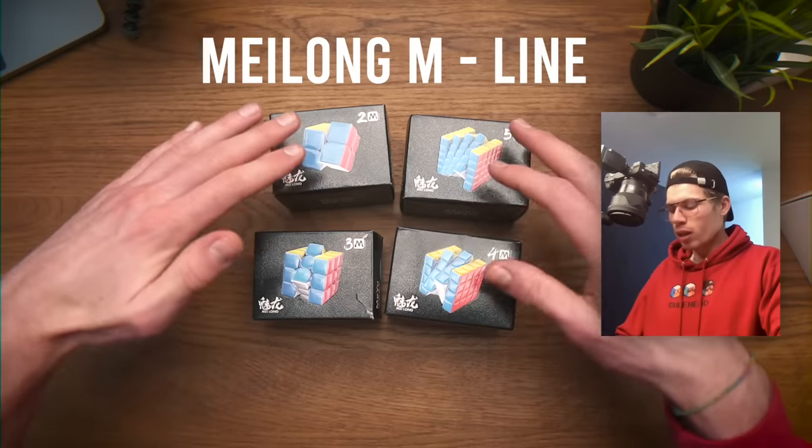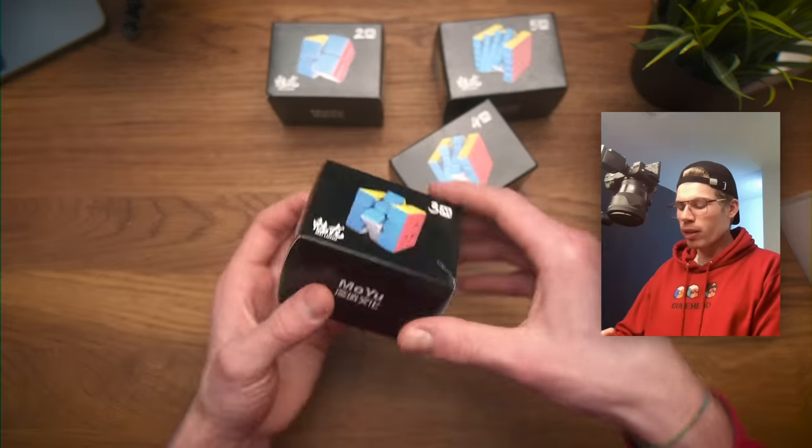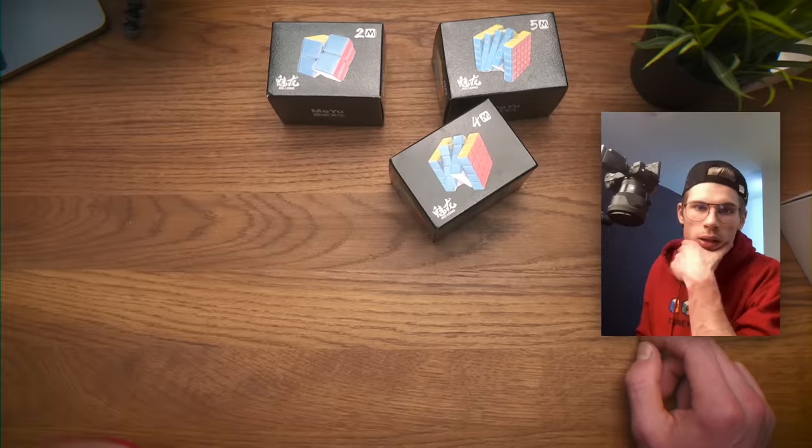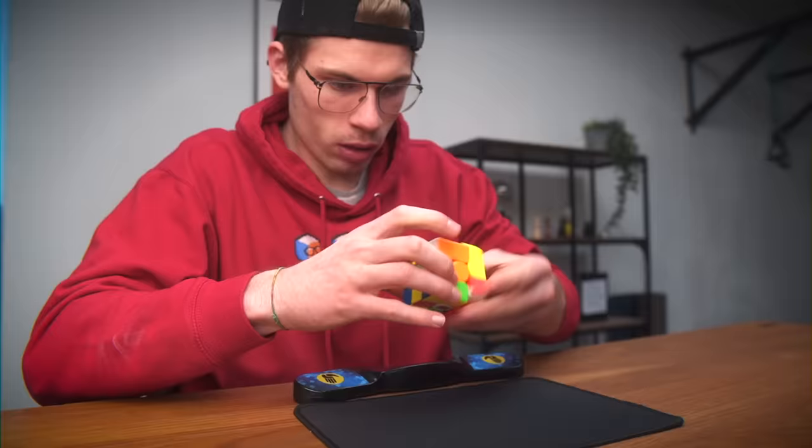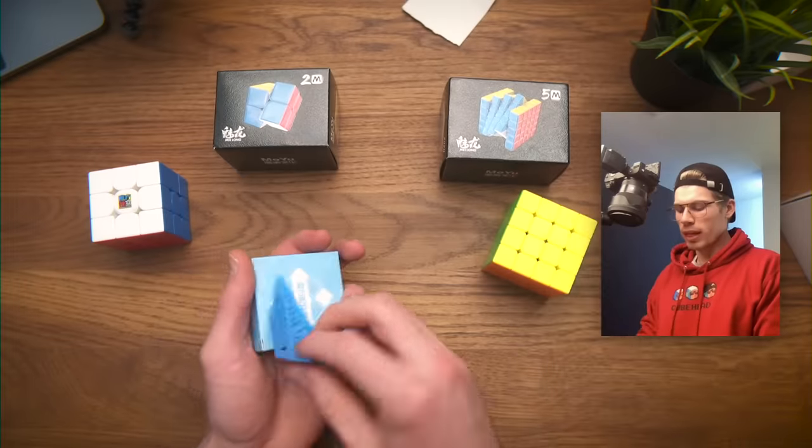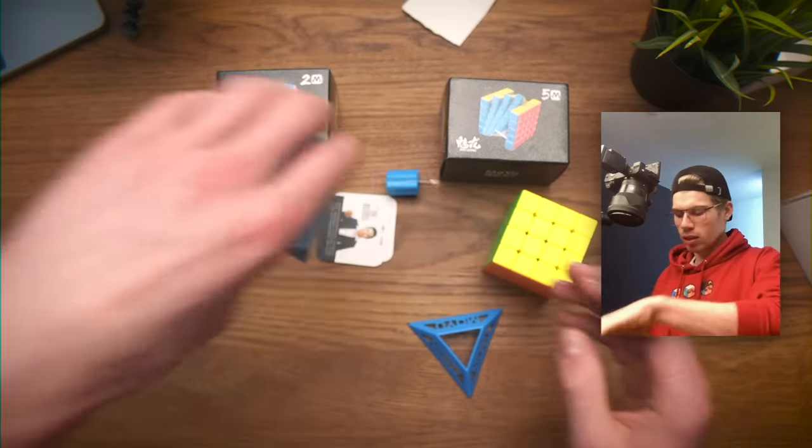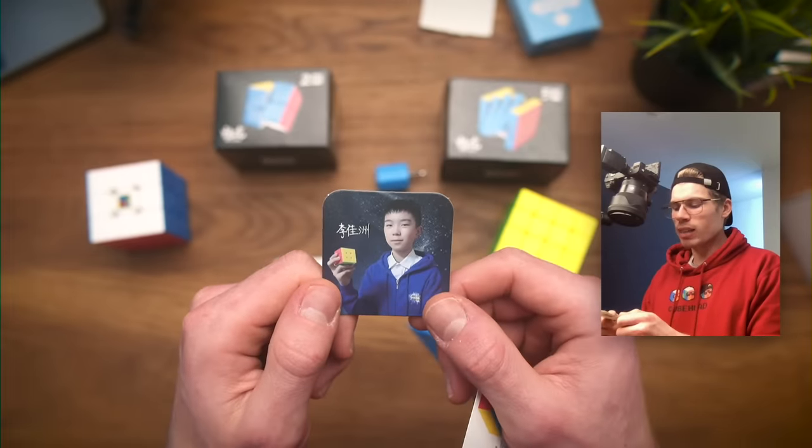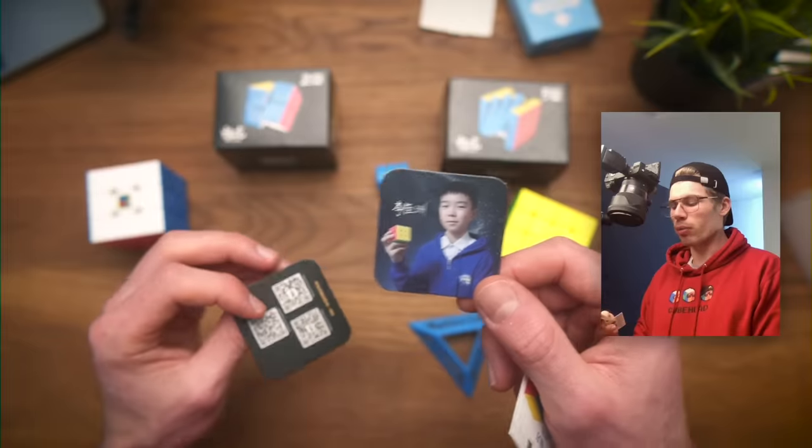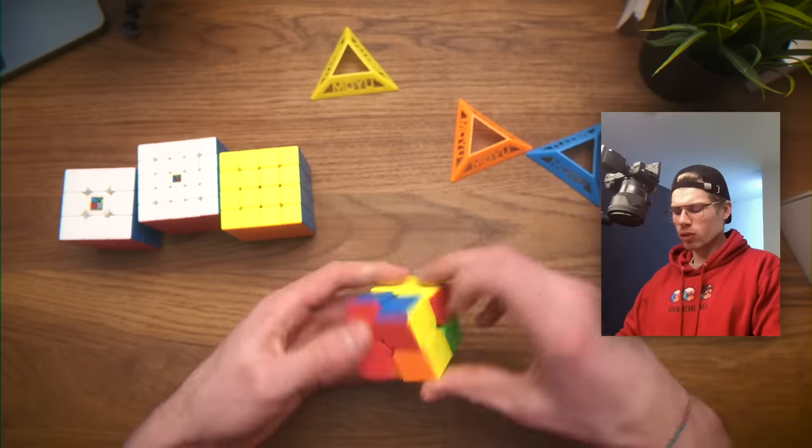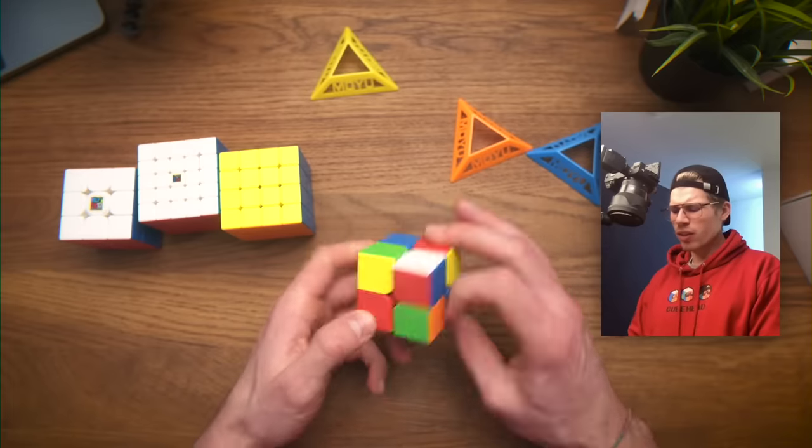I'm gonna unbox all of them. Let's start with the 3x3. Wait, this one is empty! Oh no, the Meilong was one of the cubes that exploded so I have to reassemble that one. You get cube, you get stand, you get box with screwdriver, and this very handsome fella and this quite less handsome but still very handsome little boy. Let's start with the 2x2.